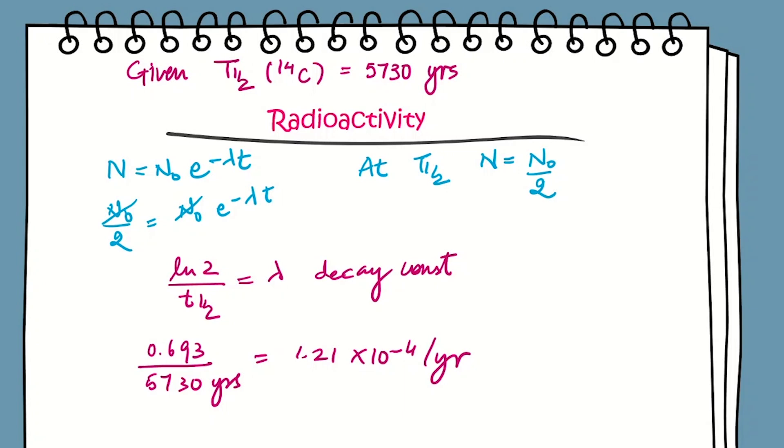Now we will convert this into per minute by dividing by 365 days, 24 hours, and 60 minutes. After solving this we get 2.3 × 10^-10 per minute.